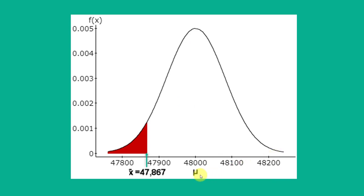We're given a mean of the population mu of 48,000, and then we're given the mean of the sample of our tires x bar of 47,867, which is down here on the lower side. We're asked to find out the probability of getting 47,867 or less, which is everything to the left of that value.